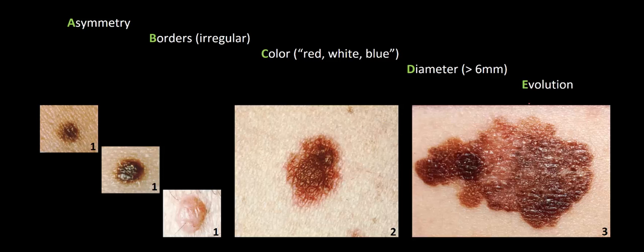One caveat to using such a simple framework is that not all dysplastic nevi or melanomas are going to have A, B, C, D, or E characteristics. However, because this is such an easy mnemonic to keep at the back of your mind, if you do come across a pigmented lesion with one or more of these red flag features, it's worth a second look — either by getting a trained eye to take another look, or even potentially taking a biopsy of the lesion to look at histologically.